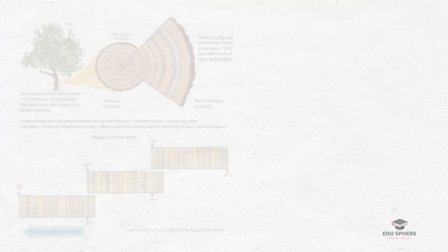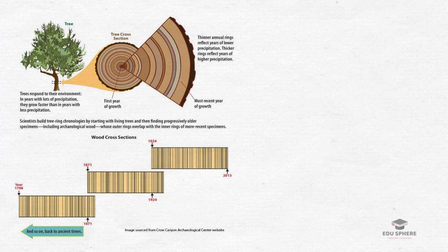Moreover, wood from ancient structures with known chronologies can be matched to the tree ring data and the age of the wood can thereby be determined precisely. This process of comparison is known as cross-dating. Dendrochronologists originally carried out cross-dating by visual inspection, but more recently they have harnessed computers to do the task, applying statistical techniques to assess the matching.